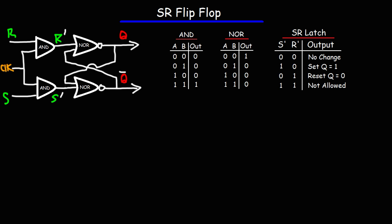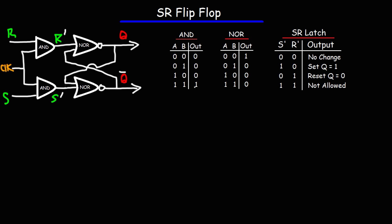Let's review the logic gates in this circuit. We have the AND gate and the NOR gate. For the AND gate, in order to get an output of 1, both inputs have to be active. For the NOR gate, in order to get an output of 1, both inputs have to be inactive or in a low state.